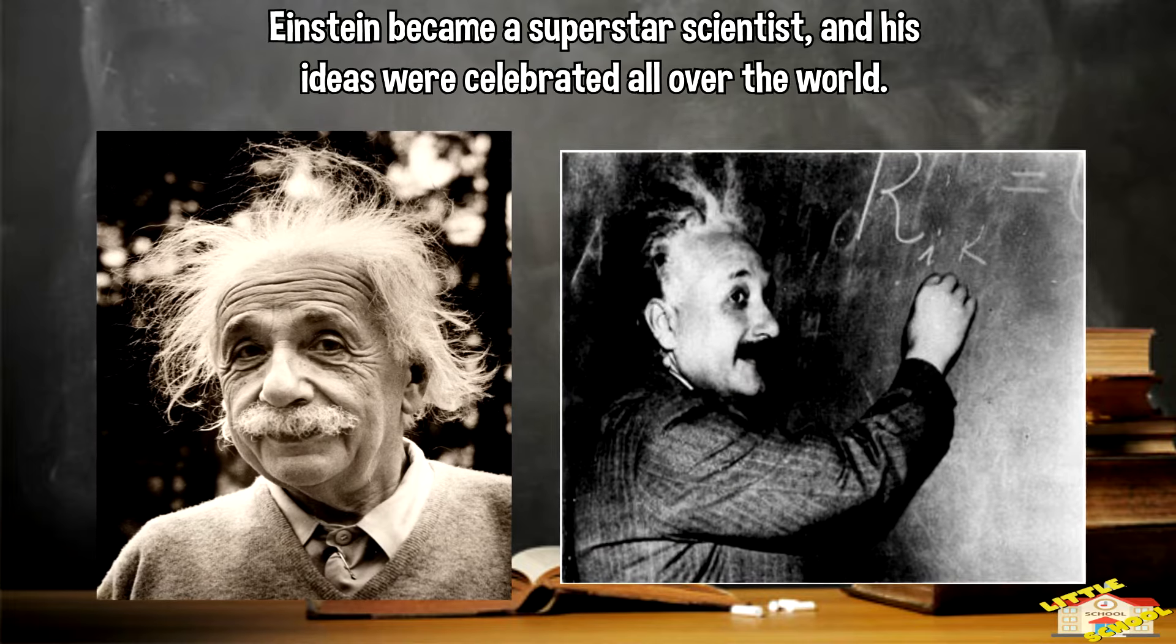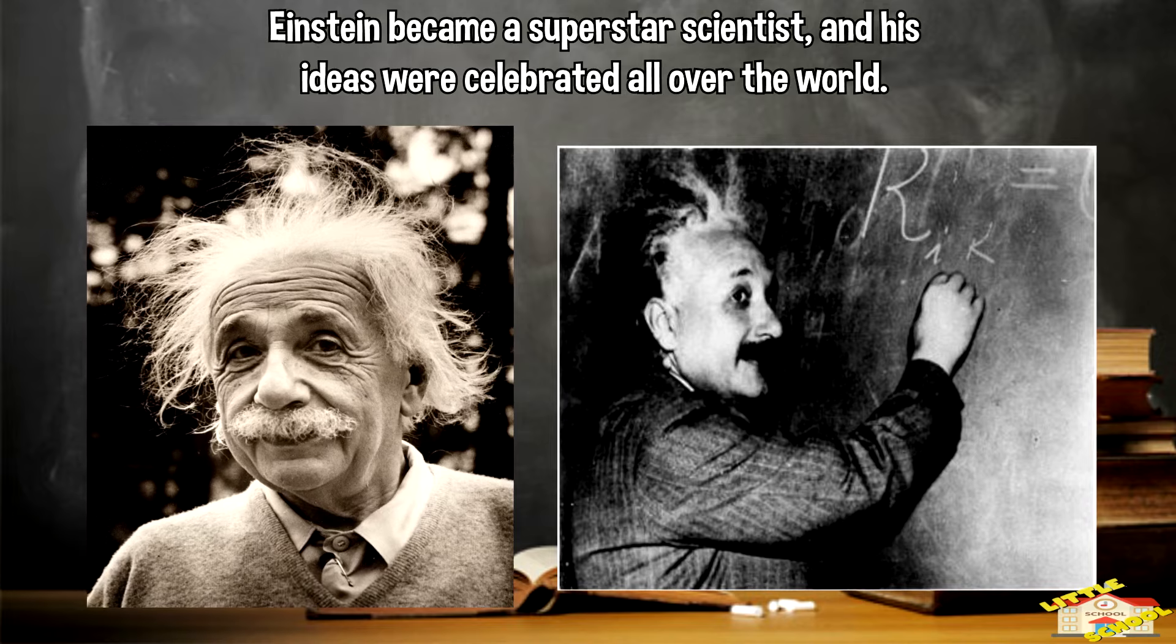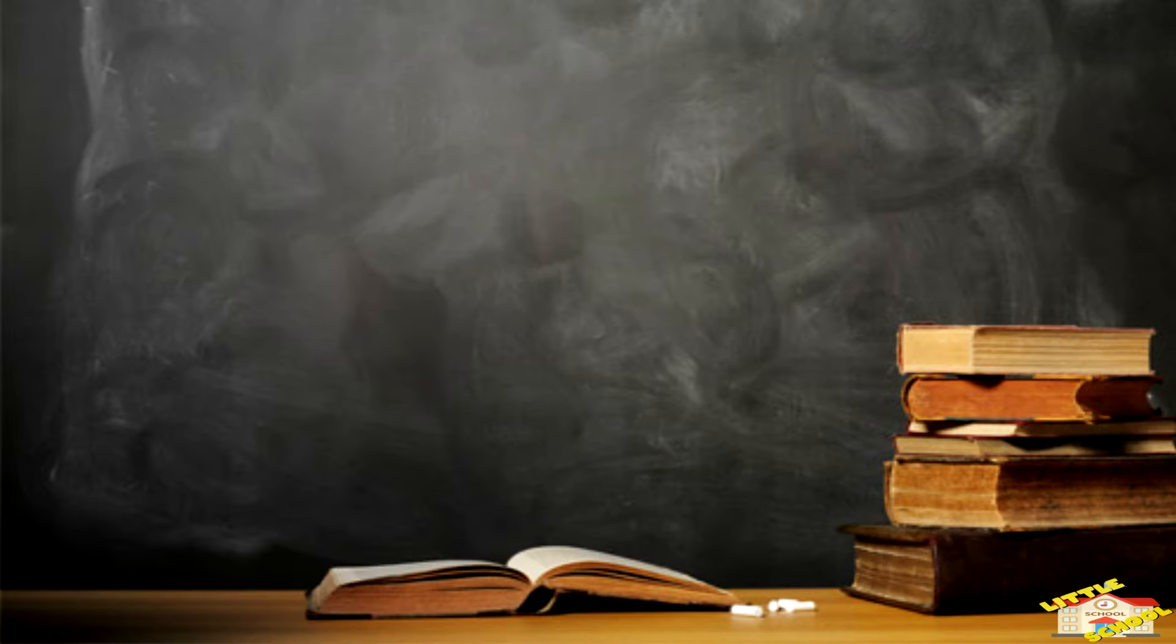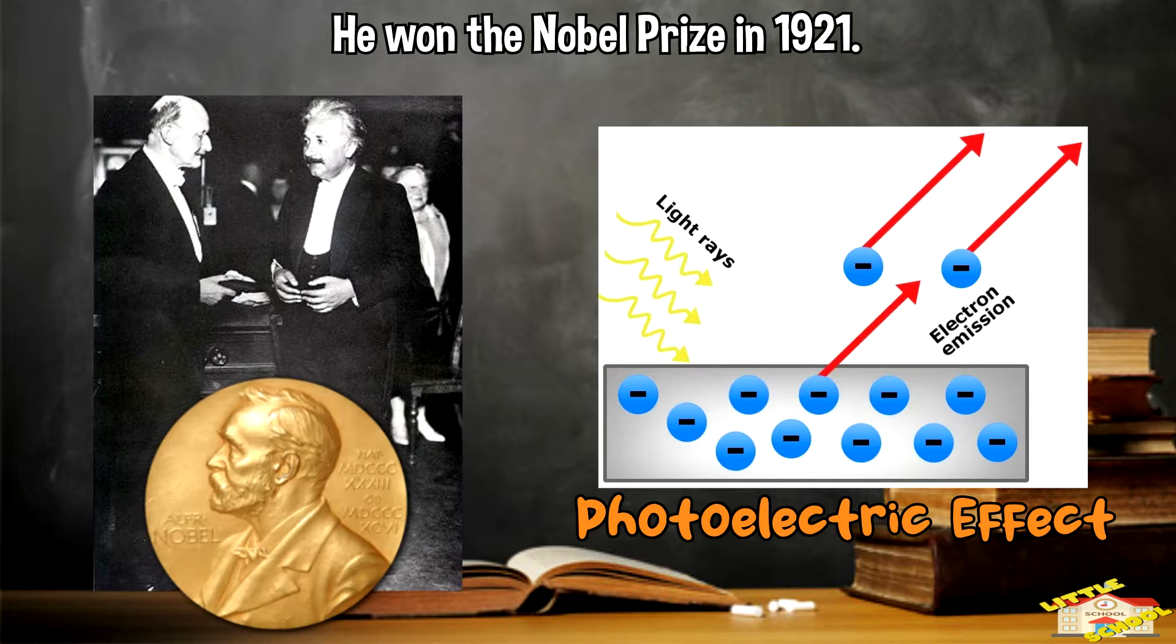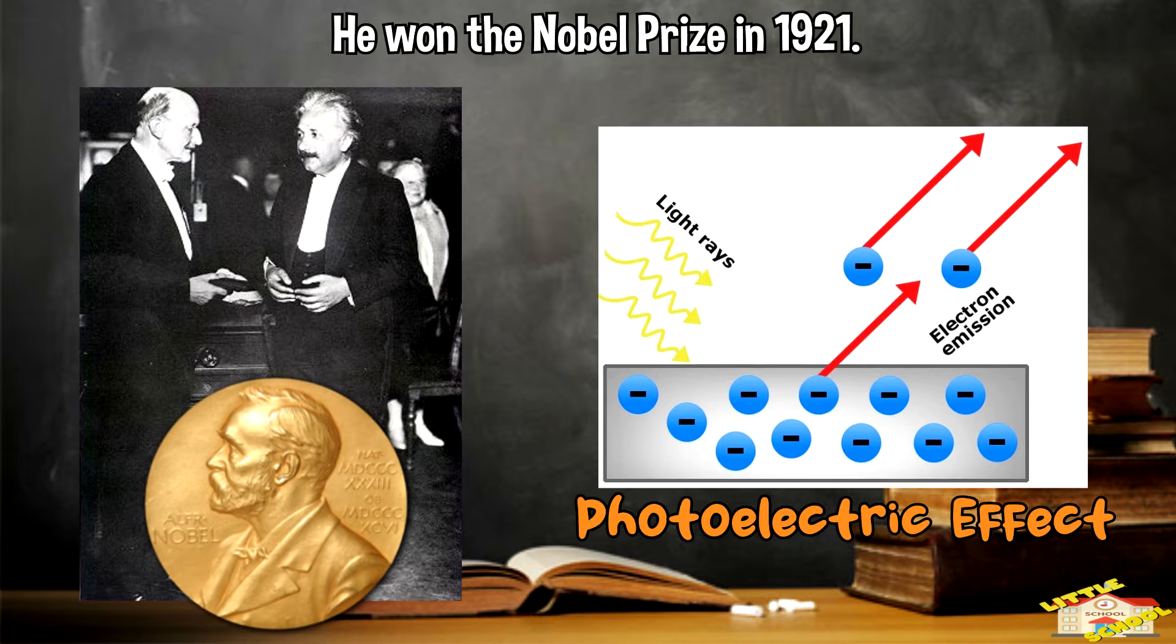Einstein became a superstar scientist and his ideas were celebrated all over the world. He won the Nobel Prize in 1921 for his explanation of the photoelectric effect, which is about how light can make electrons move in certain materials.